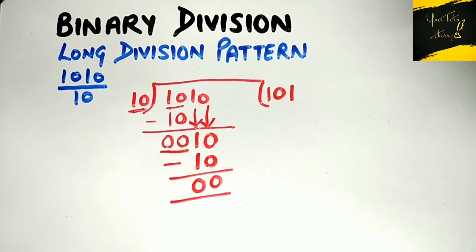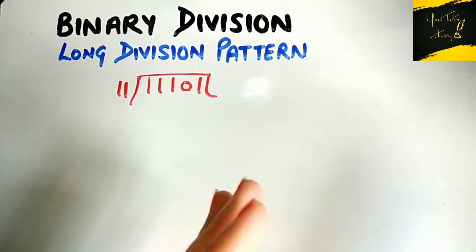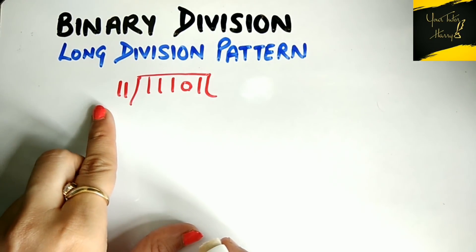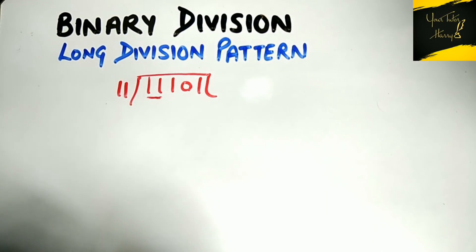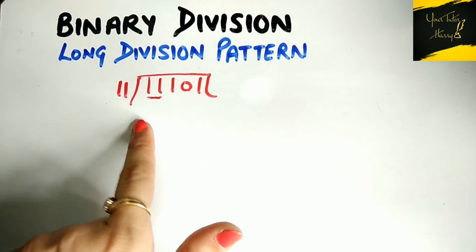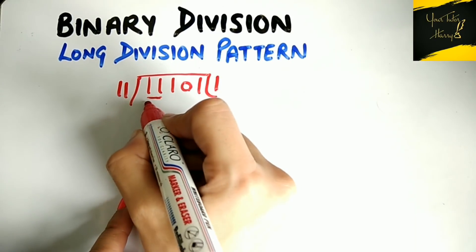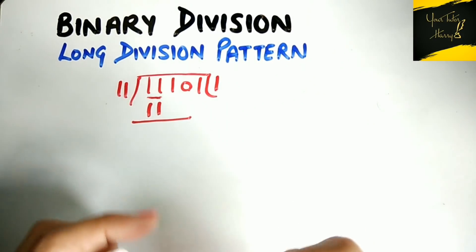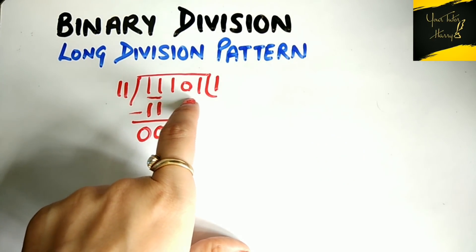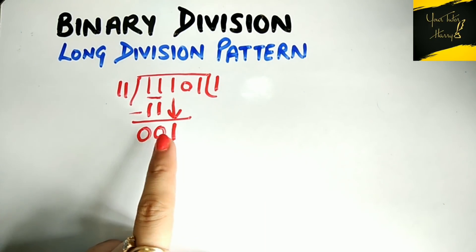Let's move to another example. As I told you, first look at the number of bits in your divisor — there are two bits. So pick the first two bits from the dividend. Check whether those bits are equal to or less than your divisor. If yes, place 1 as the quotient. Here '11' equals the divisor '11', so 1 is your quotient. After subtraction you get remainder '00', but more digits remain in the dividend, so bring down the next bit, which is 1.